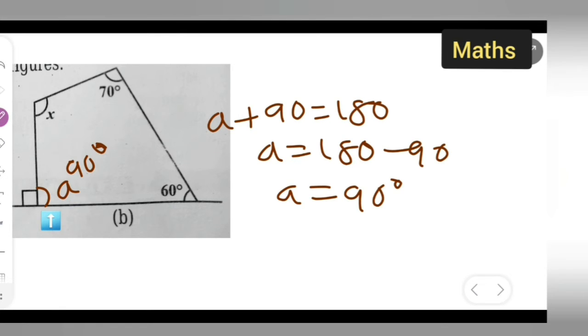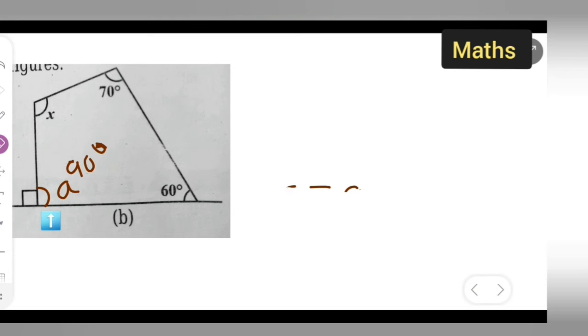Let me directly write down, start from here. Add all this: 70 degrees plus x plus 90 degrees plus 60 degrees is equal to 360 degrees.